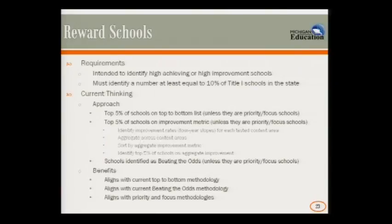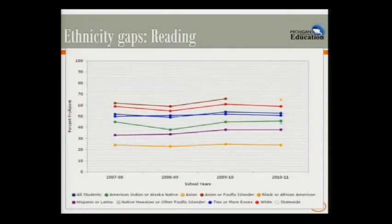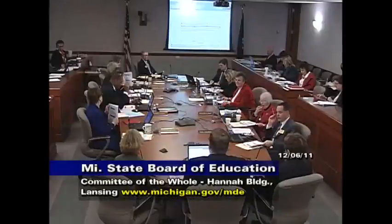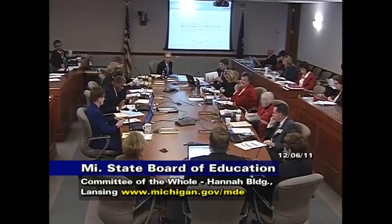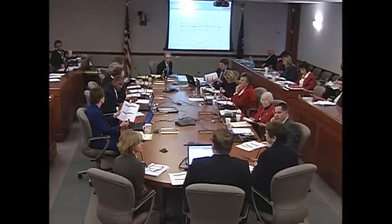Before moving to reward schools, staff sought feedback on this approach to measuring the achievement gap. A board member asked whether schools would still be able to disaggregate by race. Staff confirmed all traditional subgroups — race, ethnicity, economic disadvantage, ELL, students with disabilities — would still be disaggregated in reporting. For accountability purposes, the focus would simply be on the lowest-achieving students in a school, whichever subject they're in.